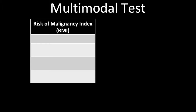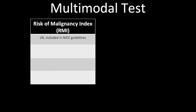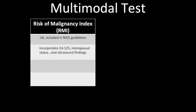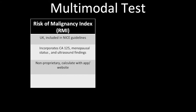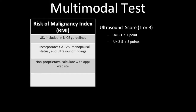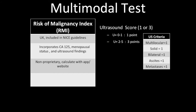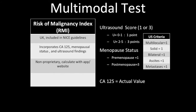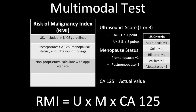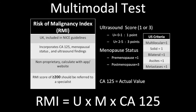The risk of malignancy index, or RMI, is largely used in the United Kingdom and is part of the NICE guidelines. It is a multimodal test incorporating CA-125, menopausal status, and ultrasound findings. An ultrasound score U is assigned as 3 if 2 or more ultrasound criteria are met, or 1 if fewer than 2 are met. M equals 1 if premenopausal and 3 if postmenopausal. The equation is: RMI = U × M × CA-125. If the RMI score is greater than 200, the patient should be referred to a specialist.